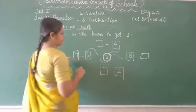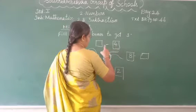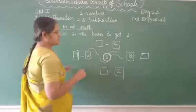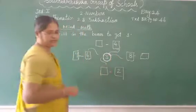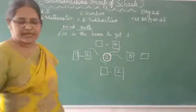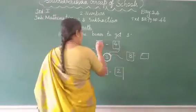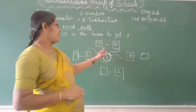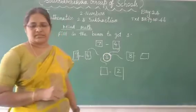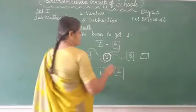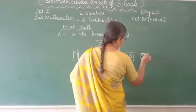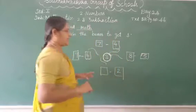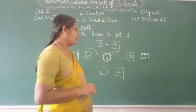Next. Here, 4 minus 4. The answer is 3. Okay. Write the number 7. 7 minus 4 equals 3. Next. 8 minus 5. 8 minus 5 equal to 3.